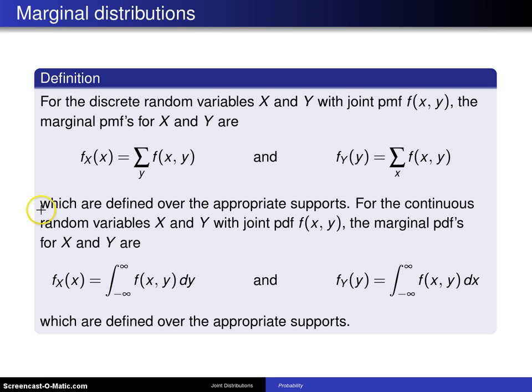Those are defined over the appropriate supports. For the continuous random variables x and y, the joint PDF is f(x,y), then the marginal PDFs for x and y will be, to find the marginal for x, you integrate out y, and to find the marginal for y, you integrate out x over the appropriate support.